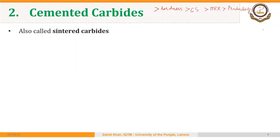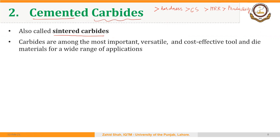Welcome back. The second cutting tool material we are going to discuss are carbides. These are also called cemented carbides or sintered carbides because they are made using a sintering process. Carbides are among the most important, versatile, and cost-effective tool and die materials for a wide range of applications, including cutting tool applications and other tool and die applications as well.